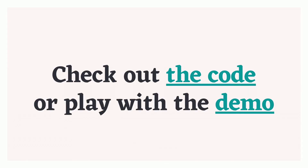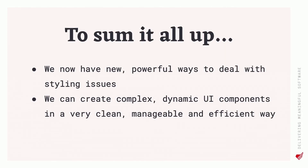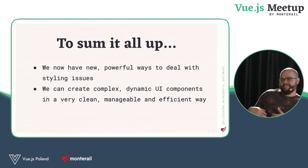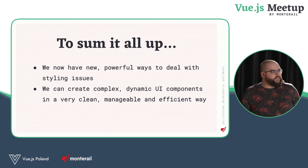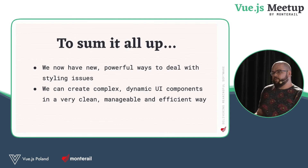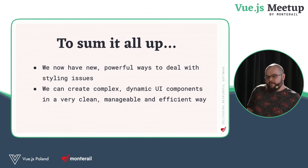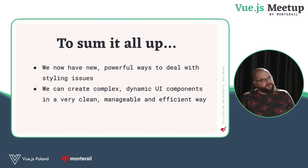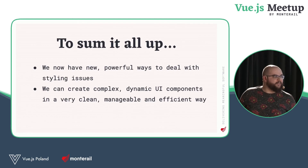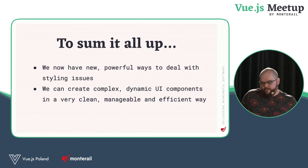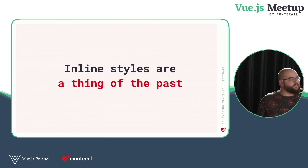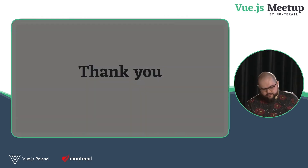With that said, I'll of course be sharing the code and the demo — I'll be tweeting those and probably someone from the event will share them with all of you. To sum it all up: what we have now are new powerful ways to deal with styling issues. With this approach, we can create very complex dynamic UI components in a very clean, manageable, and efficient way — the code is quite straightforward and there's not really that much of it. The examples are quite powerful. And most importantly and personally for me, this was the last bastion. It has taken a lot of painful years. But I can finally say that inline styles are finally a thing of the past. Thank you.